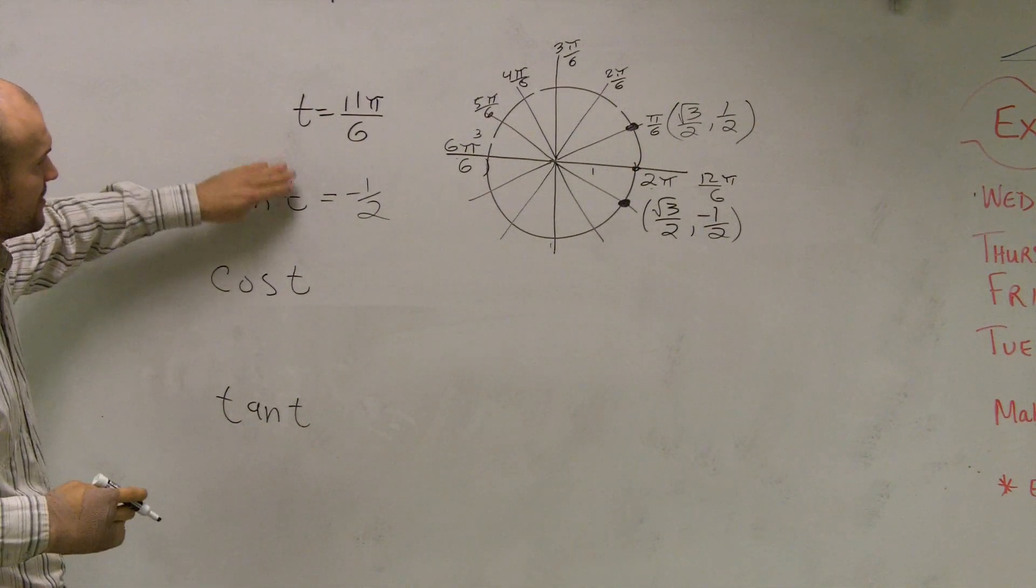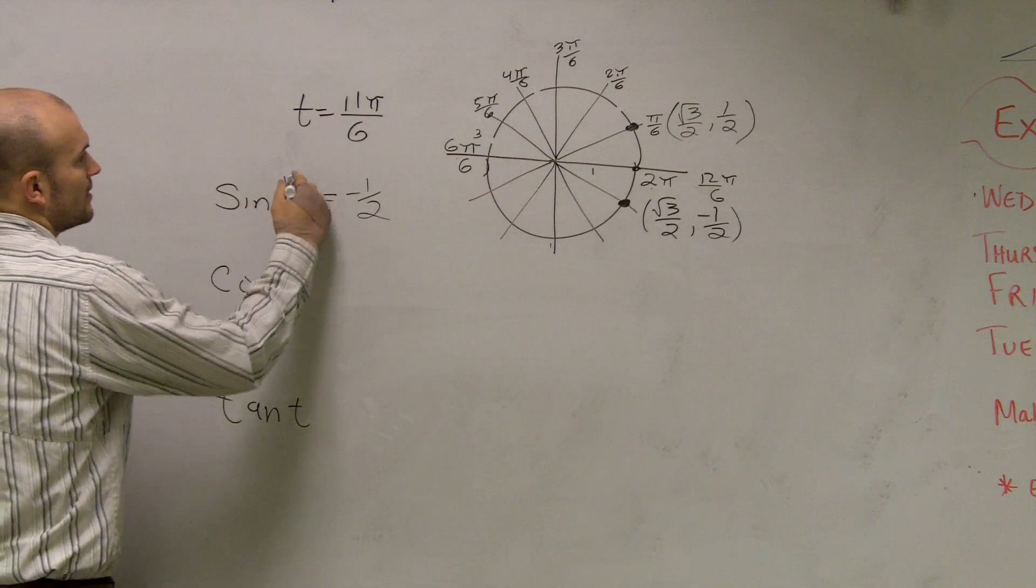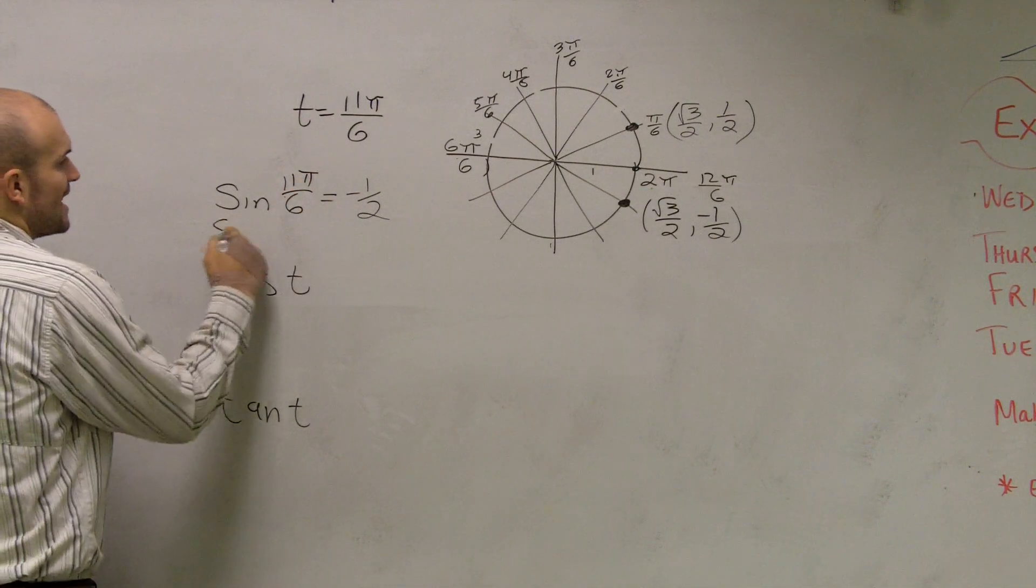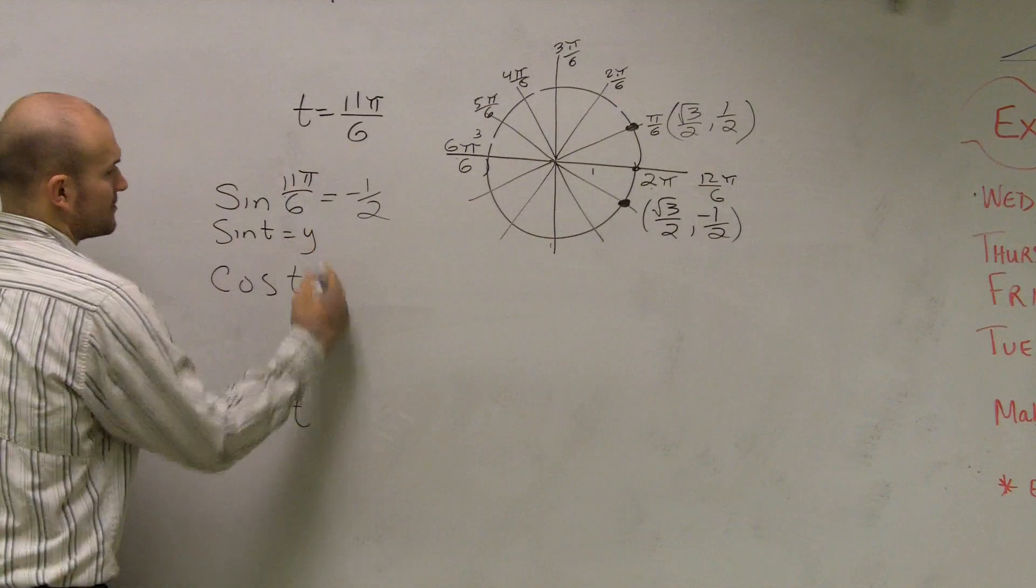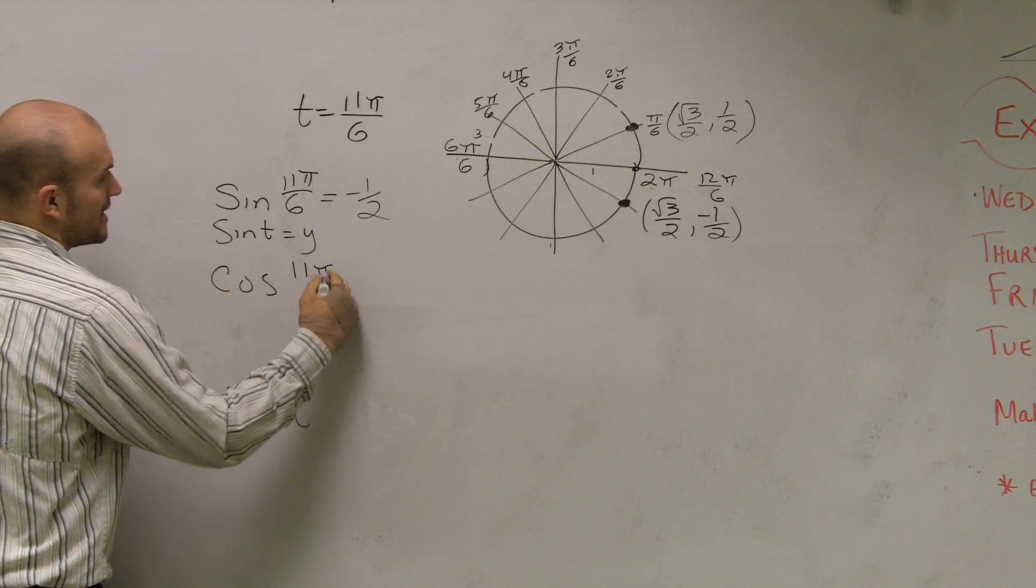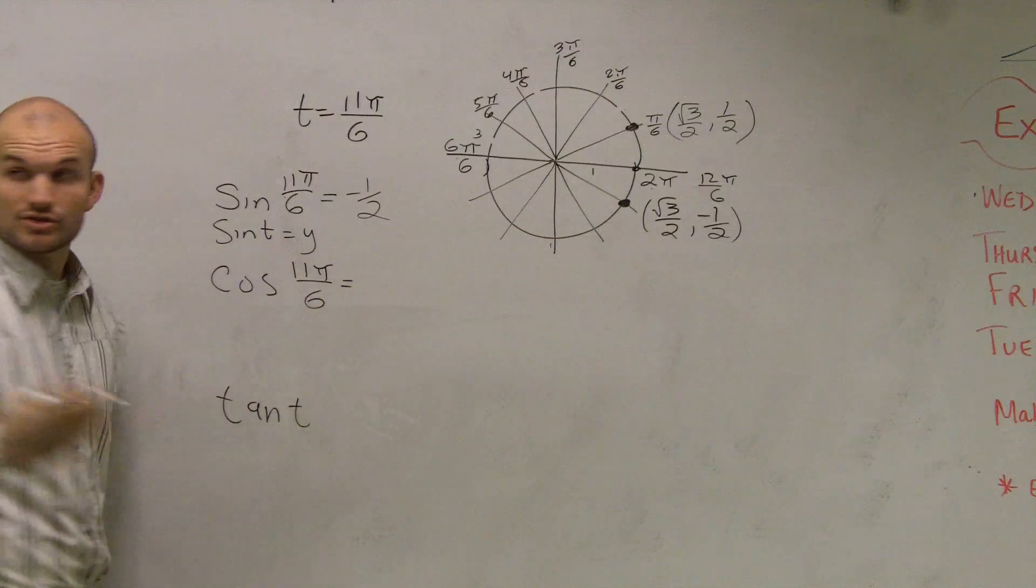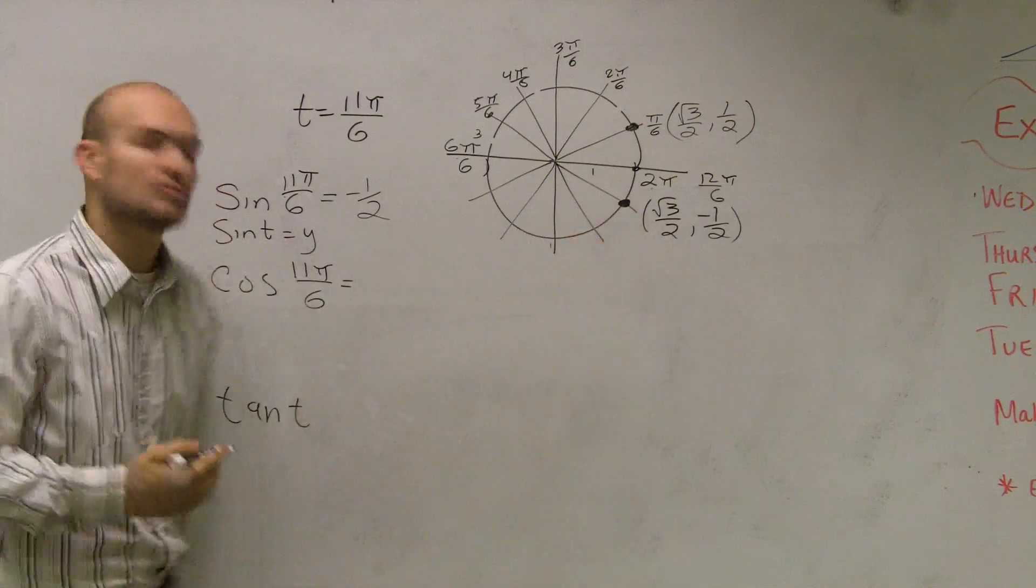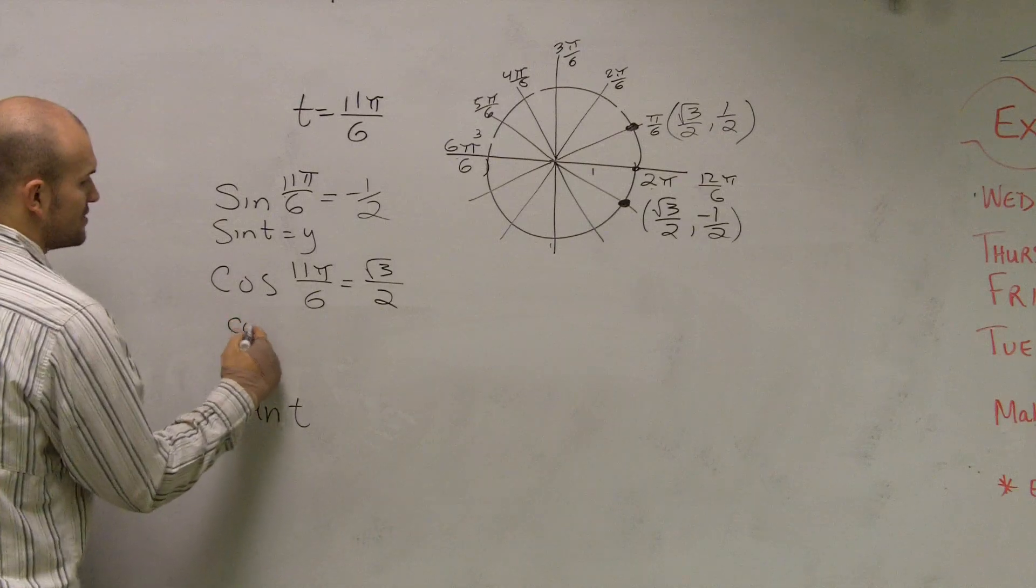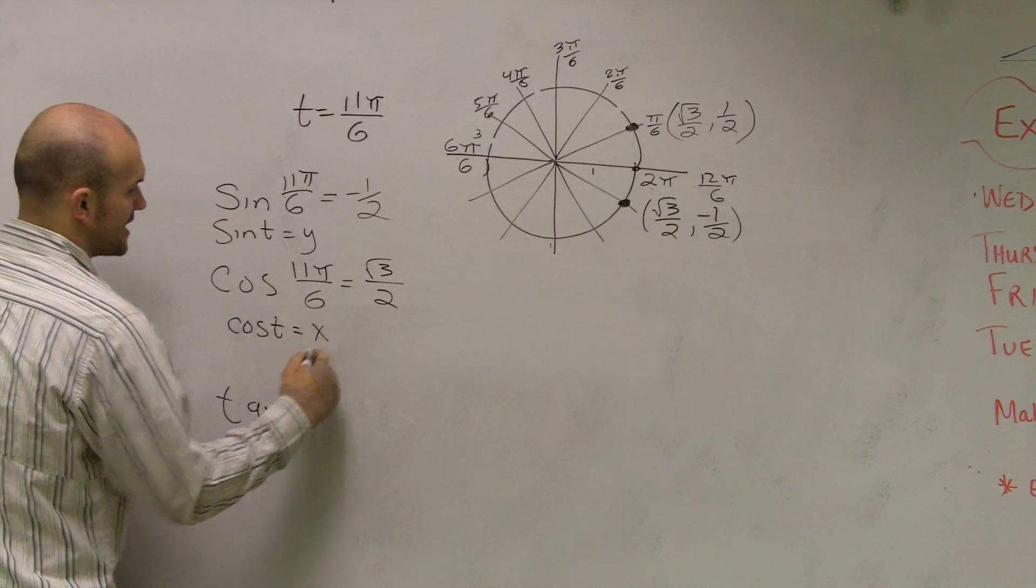Cosine is going to be x. We can also say this is 11π over 6, because sine of t equals y. So cosine of 11π over 6 is equal to the x, which is root 3 over 2, because cosine of t is equal to the x-coordinate.